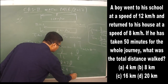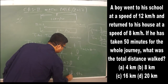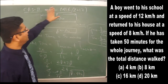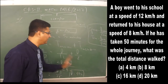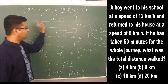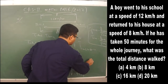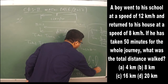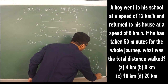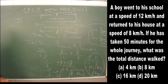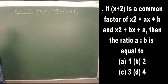Solving, d = 4 km. This is the one-way distance from home to school. Since the question asks for total distance walked, it is d + d = 4 + 4 = 8 km. The correct answer is 8 km.